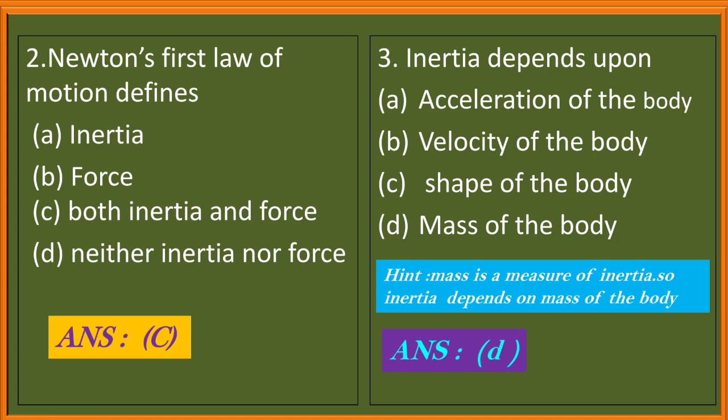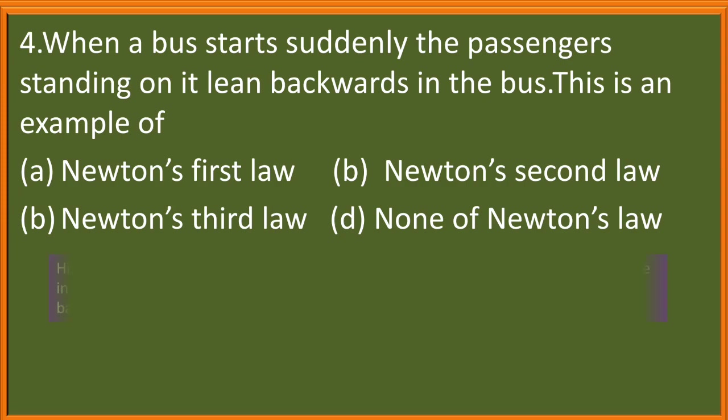Question 3. Inertia depends upon: acceleration of the body, velocity of the body, shape of the body, mass of the body. Since mass is a measure of inertia, so inertia depends upon mass of the body. Your answer is D, mass of the body.